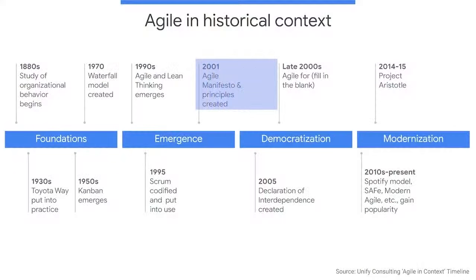In 2001, the thought leaders and creators of some of these new processes, also called methodologies, came together to find common ground between their methods and solve a problem. The problem, they agreed, was that companies were so focused on planning and documenting their projects that they lost sight of what really mattered — pleasing their customers. So these leaders came up with the Agile Manifesto to guide others on what they believed really matters when developing software, which is keeping the process flexible and focusing on people, both the team and the users, over the end products or deliverables.